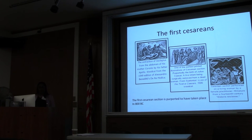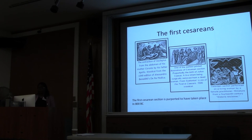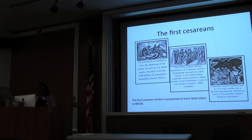The first picture is from Greek mythology — a depiction of a perimortem cesarean where the mother is dead and they're delivering a live fetus. Cesarean is thought to come from Julius Caesar, although historians believe there is no way he was delivered by cesarean because his mother actually lived to see him take over the British Empire. Women in those days did not survive a cesarean section. The last picture shows a cesarean section where both the baby and the mom are living, from about 1580.